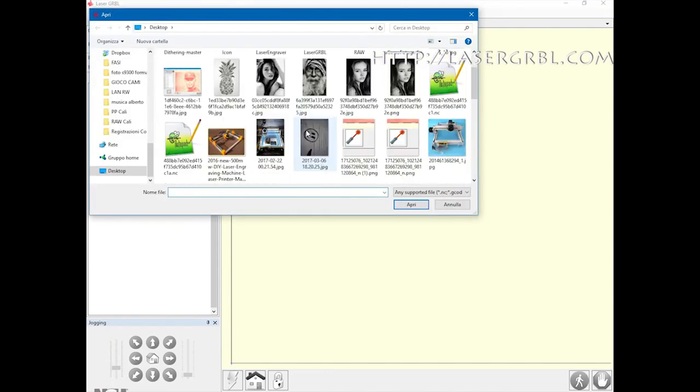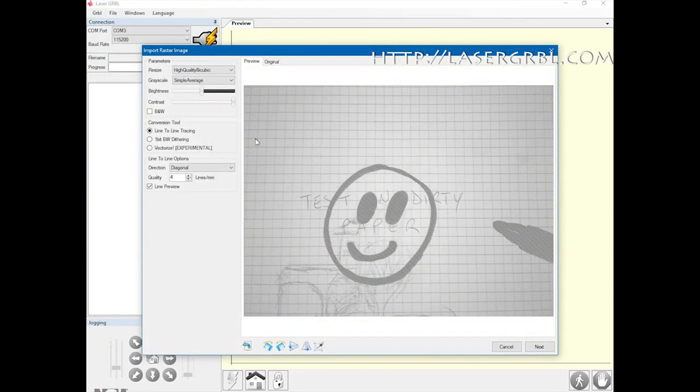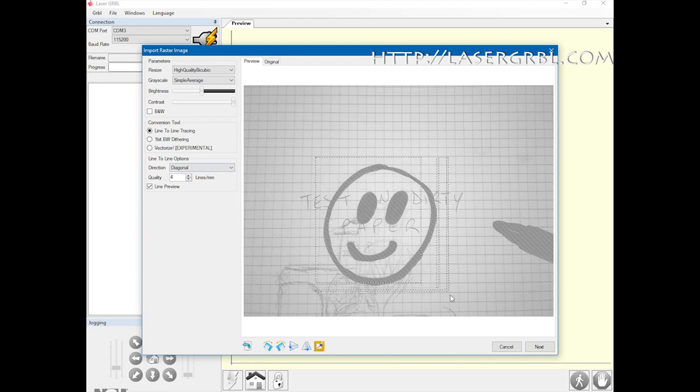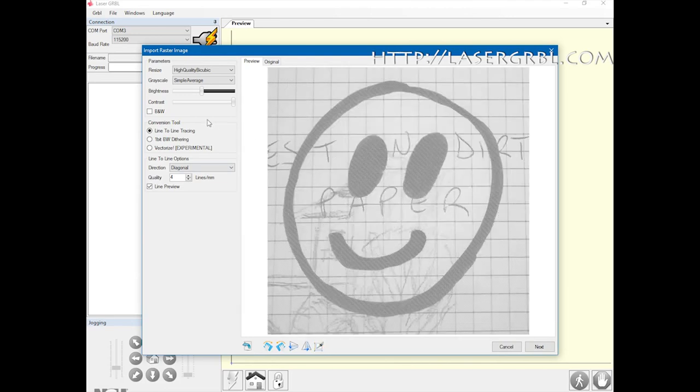We open the image with laser GLBL. Playing with the brightness and contrast controls, we can strengthen the marker sign.